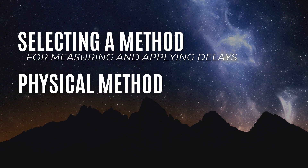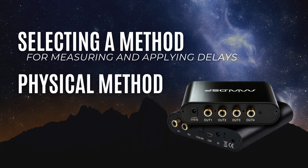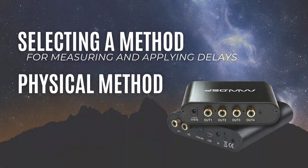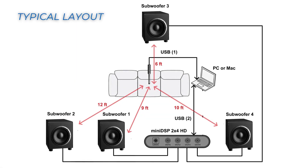Our example for this video shows a MiniDSP 2x4 HD driving four subwoofers in a home theater system. Since everything is done with a tape measure and no electronic measurements, a full-range timing reference speaker is not necessary. This diagram depicts the physical layout and center position for making measurements in a home theater setup with four subwoofers, which will be delay-corrected prior to being connected to the audio-video receiver, or AVR.